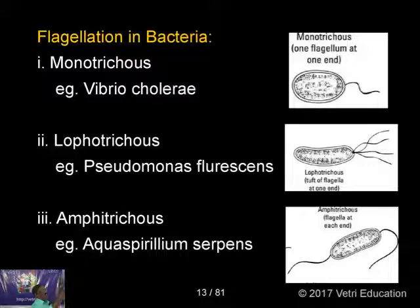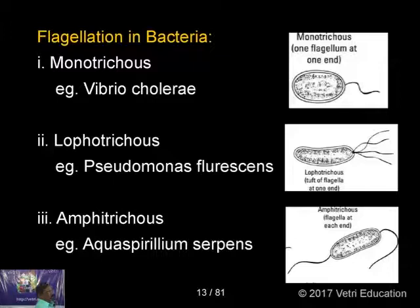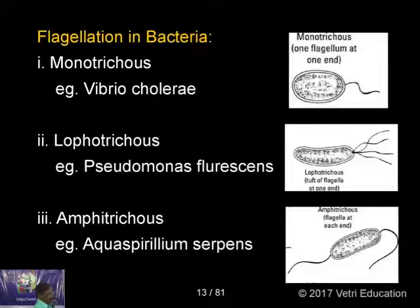Example of monotrichus: Vibrio cholerae. The second type is lopotrichus, meaning a bunch of flagella at one end — example: Pseudomonas fluorescens. The third type is amphitrichus, meaning a single flagellum at both ends — example: Aquaspirillum serpens. The fourth type is peritrichus, where flagella are found all over the body throughout — example: Salmonella typhimurium.